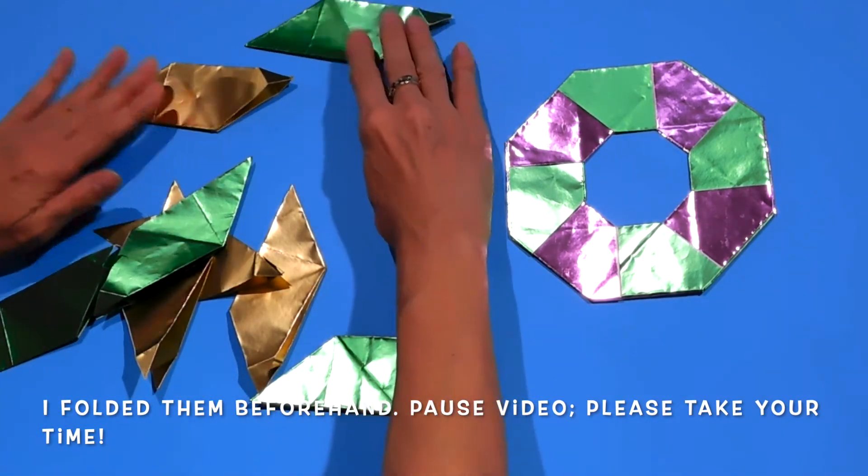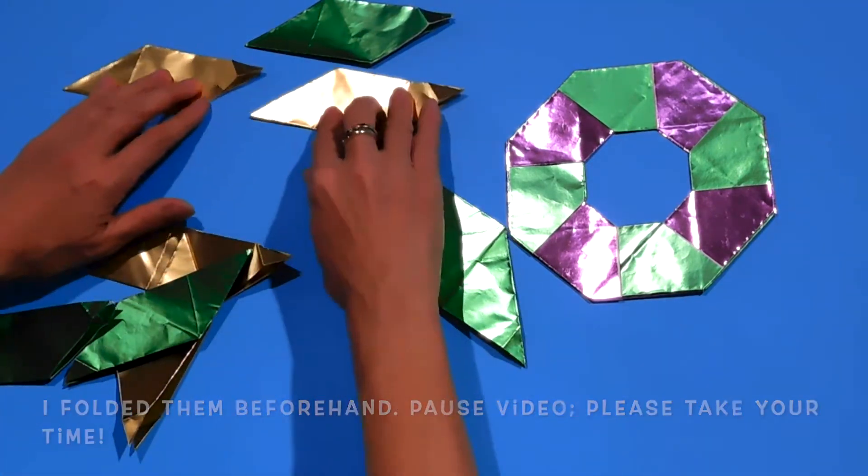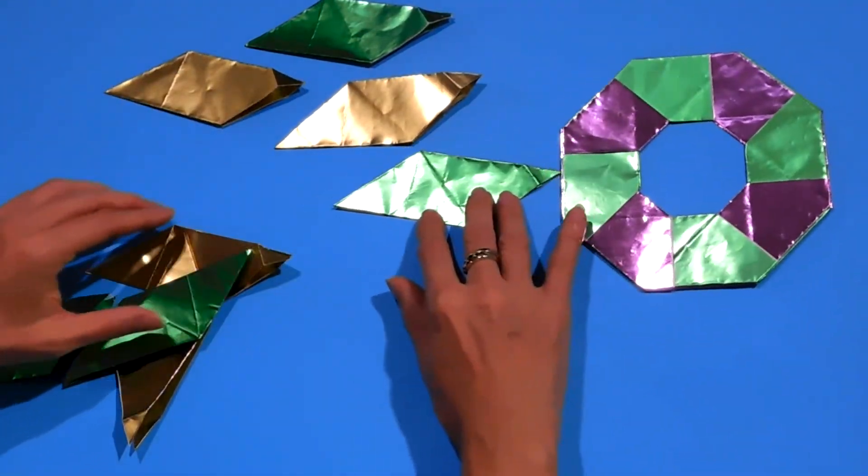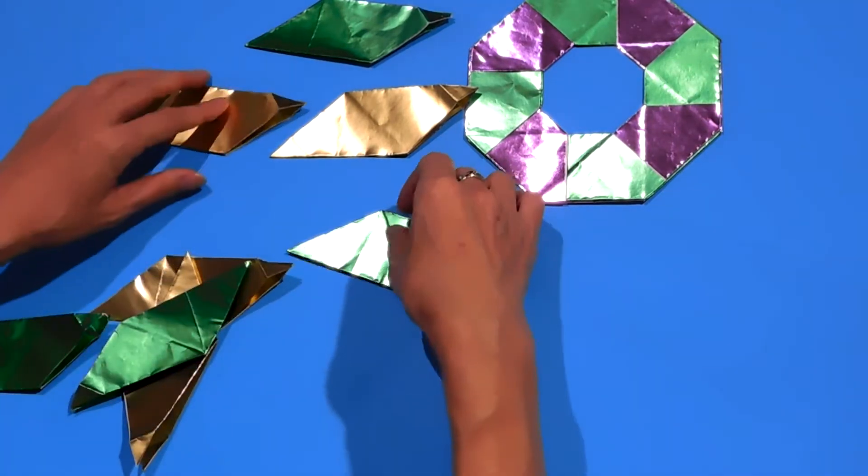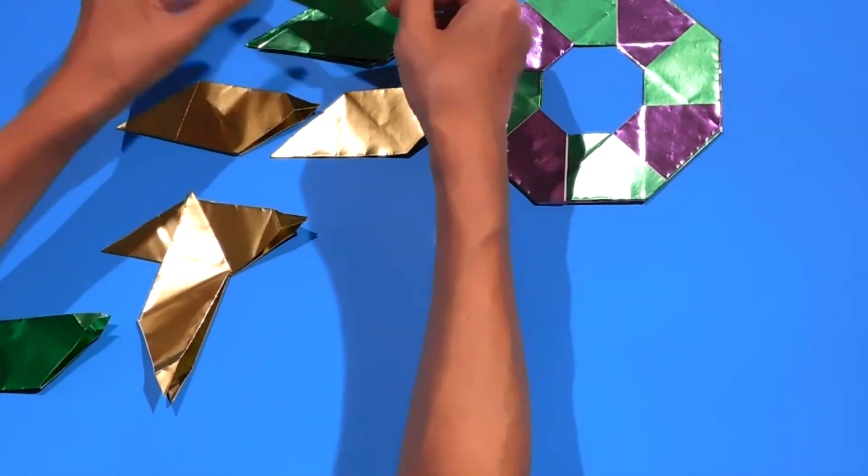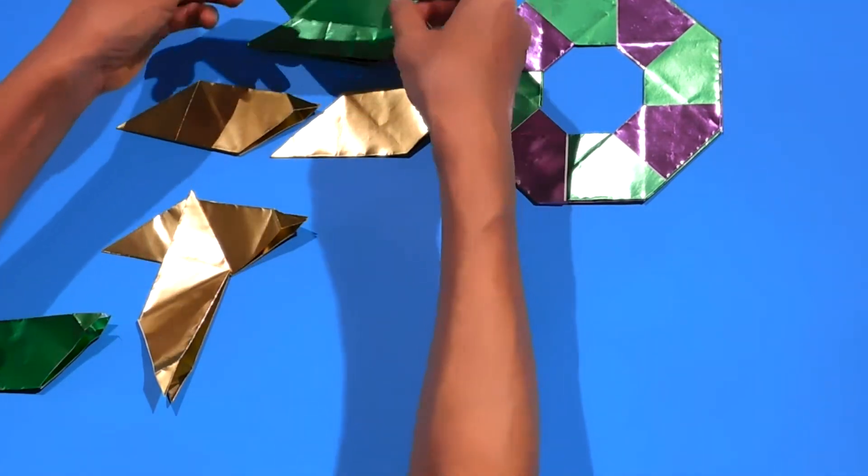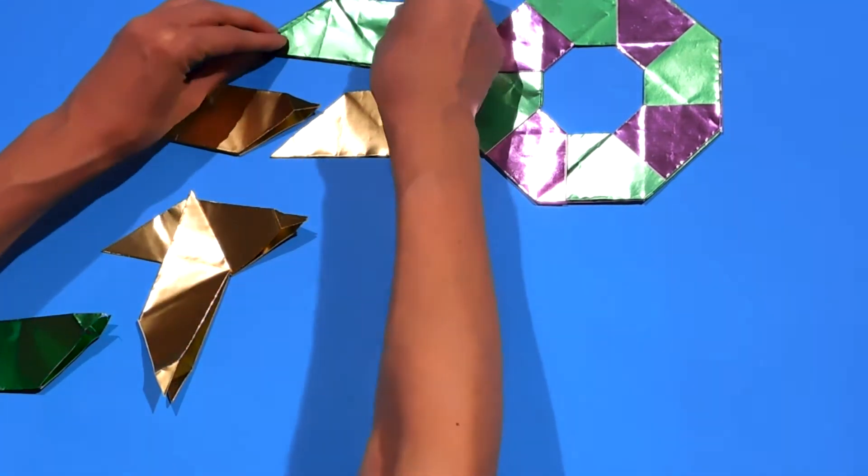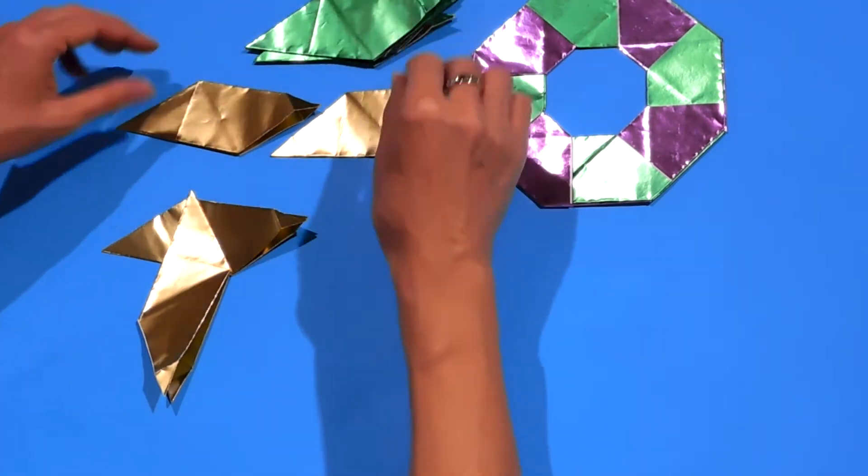And I suggest you put all your units in the same direction. So I have four green ones. One, two, three, four green ones.